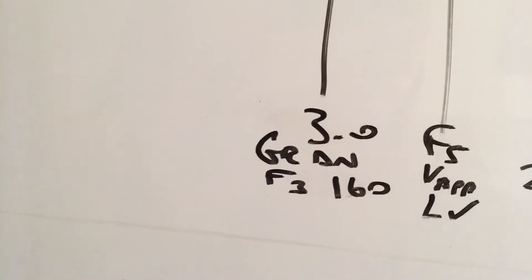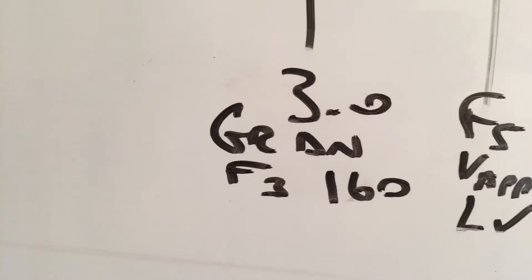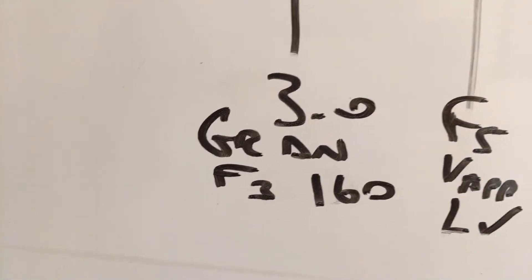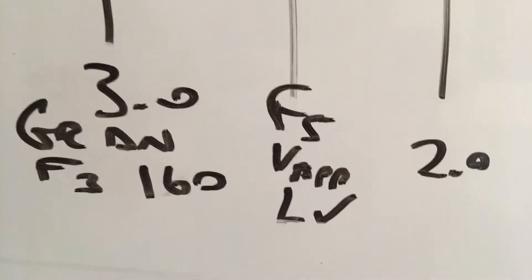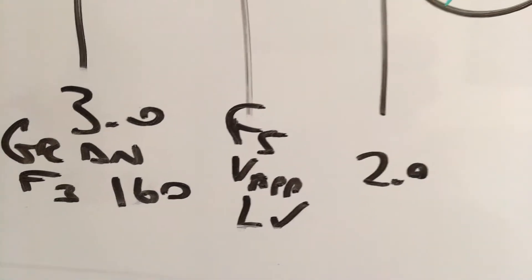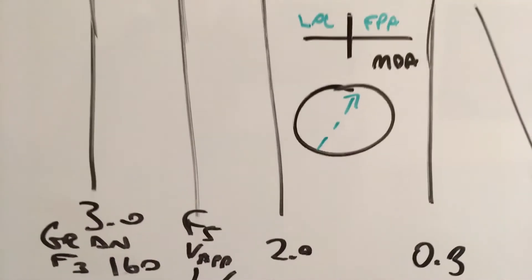Coming up on three miles from the final approach fixed. Go ahead and select gear down, flaps 3, 160, and then flaps 5 via approach landing checklist. Be fully configured prior to two miles from the final approach fixed.